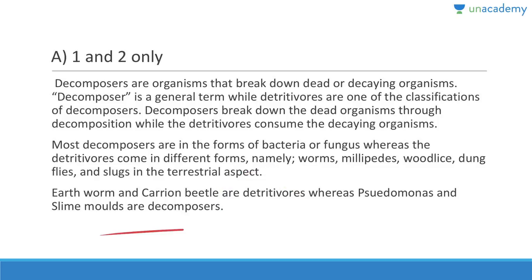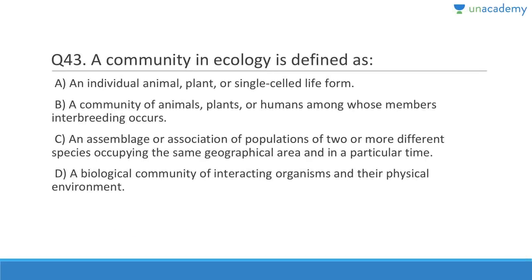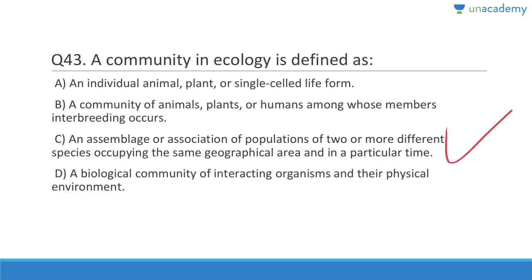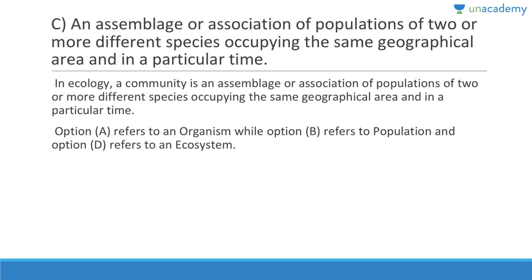Question forty-three: A community in ecology is defined as an assemblage or association of populations of two or more different species occupying the same geographical area at a particular time. Note: option A refers to organism, option B refers to population, and option D refers to an ecosystem. You should know these terms properly.